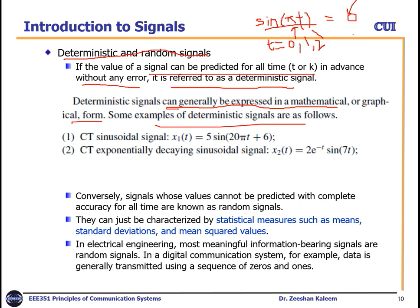Some examples of deterministic signals: a continuous time sinusoidal signal x₁(t) = 5 sin(20πt + 6) — put in time t and you can get x₁(t). Another is a continuous time exponentially decaying sinusoidal: x₂(t) = 2e^(−t) sin(70t) — put in t and you get the exact value. These types of signals are called deterministic. In wireless communication, however, the channel introduces random signals, bringing us to the next term.